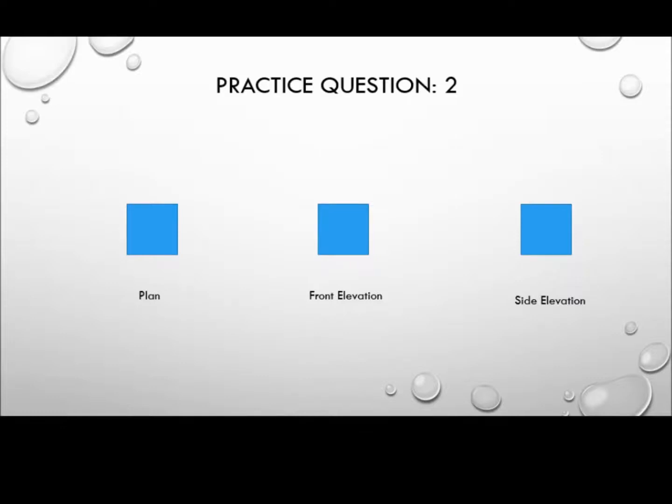What three-dimensional shape would look like a square if seen from directly above, from straight in front, or from the side?